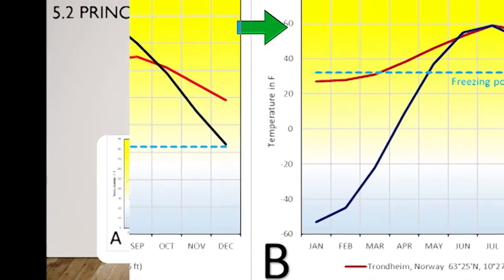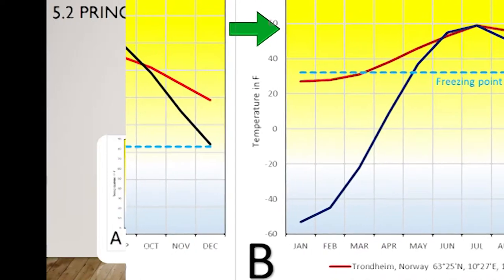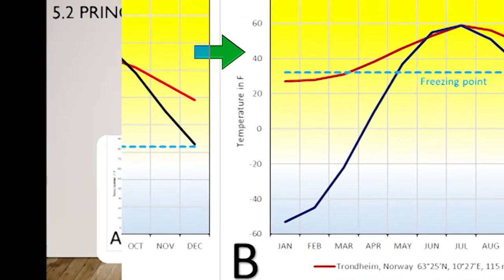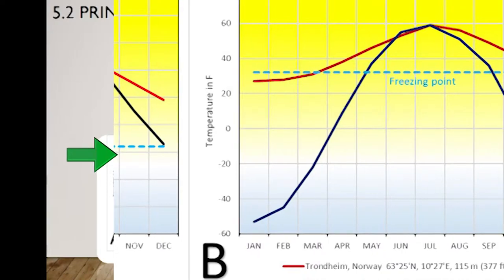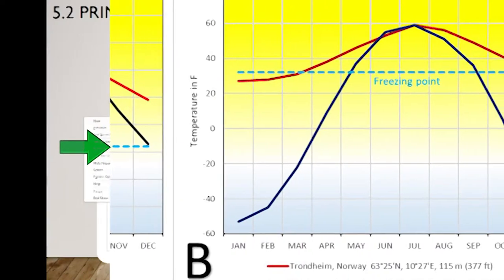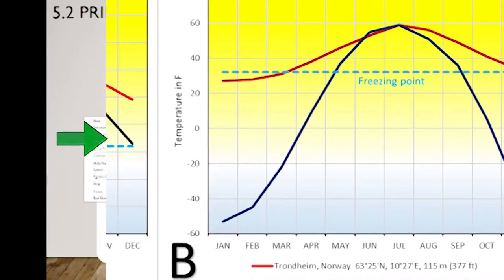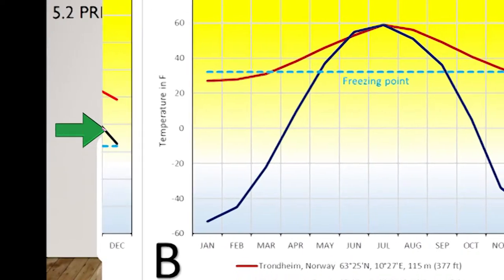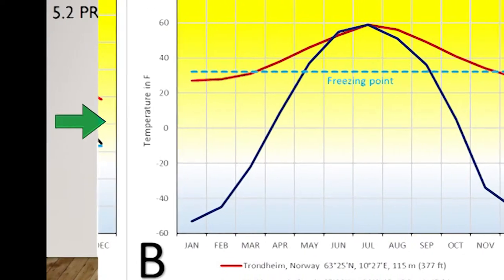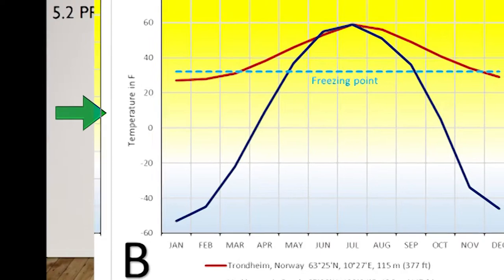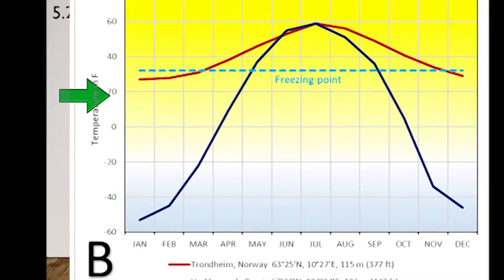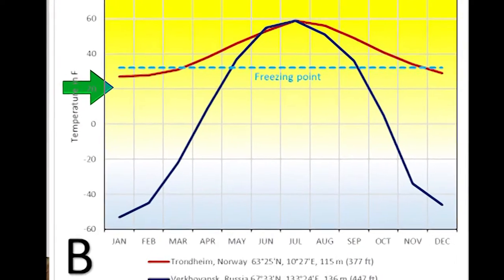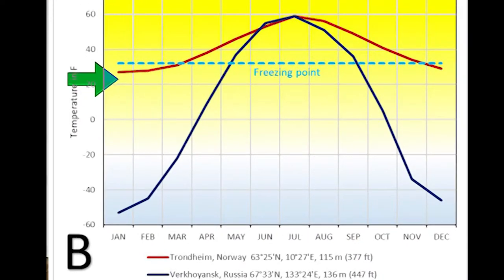Look at what happens in Wichita — much warmer in the summer and it starts getting cooler in the winter. That's the continental effect. Another example is Trondheim, Norway — that's the red line.